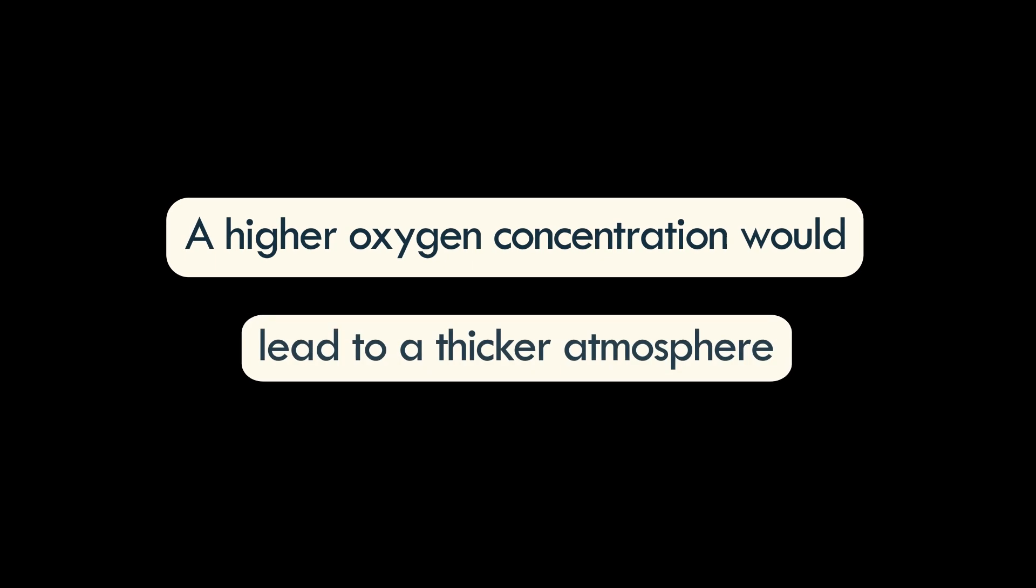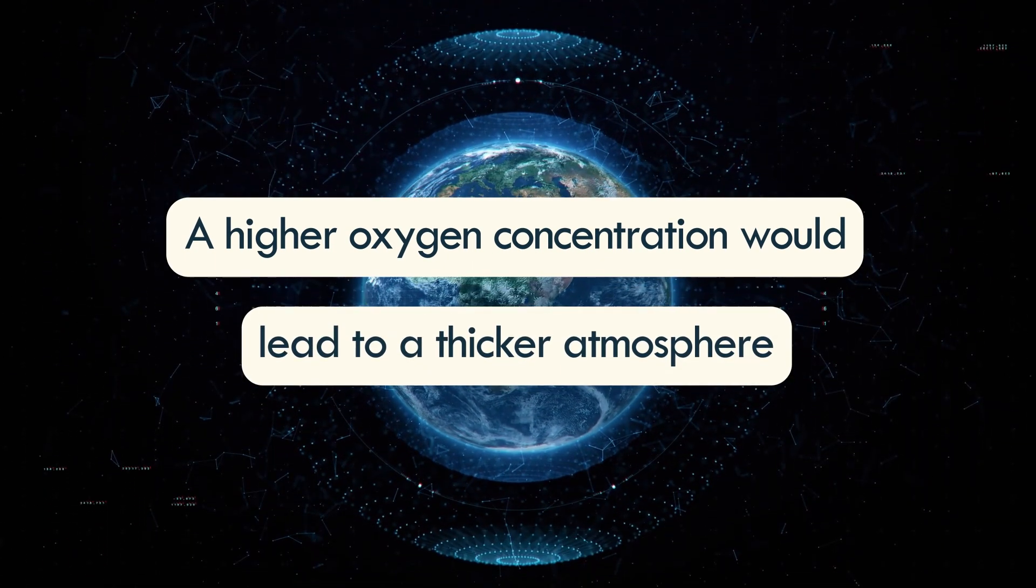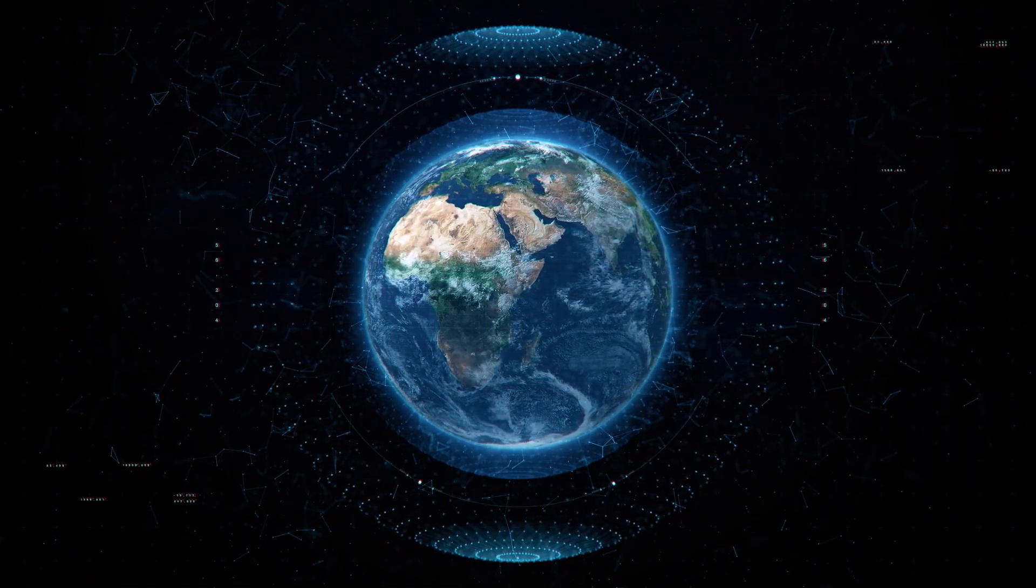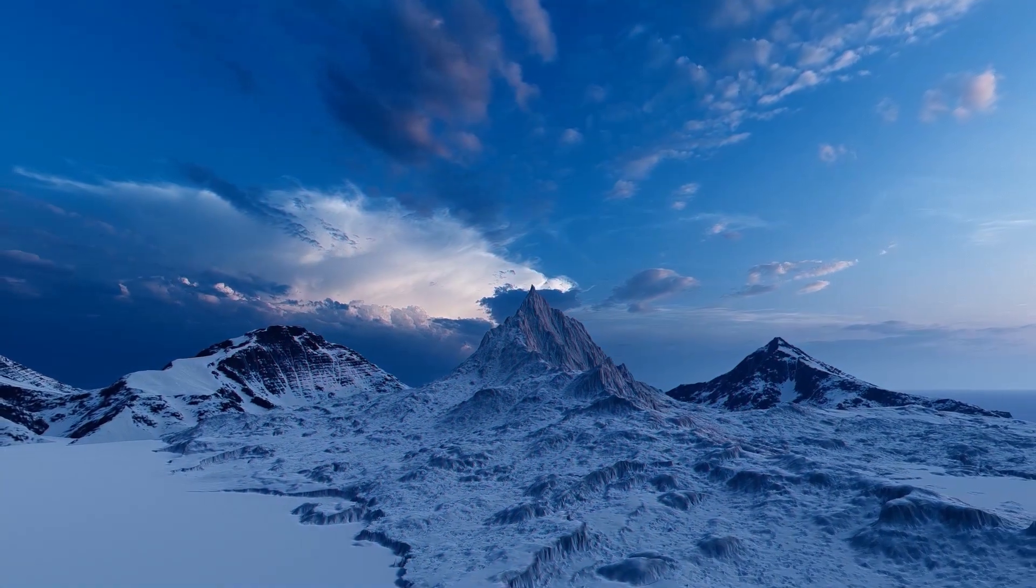A higher oxygen concentration would lead to a thicker atmosphere, which would scatter more sunlight, make the sky look bluer and lower the air temperature.